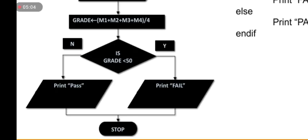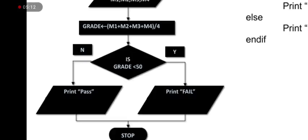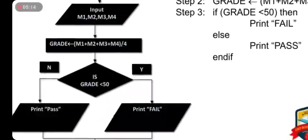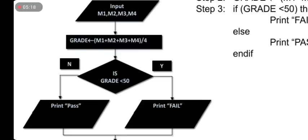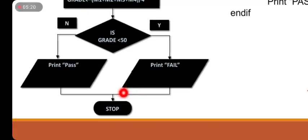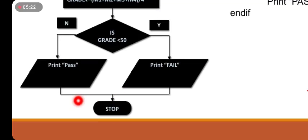Decision is made using diamond shape. Is grade less than 50? Then the result will be shown here - yes. And if the grade will be greater than 50, the result will be shown here - no, pass. Then the terminal shape is used to stop the program. It means the program is end.